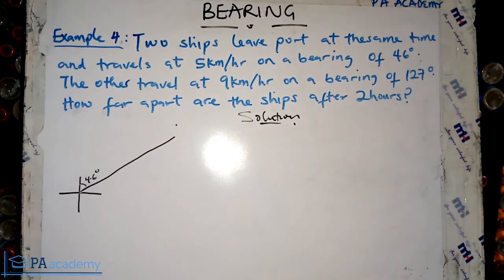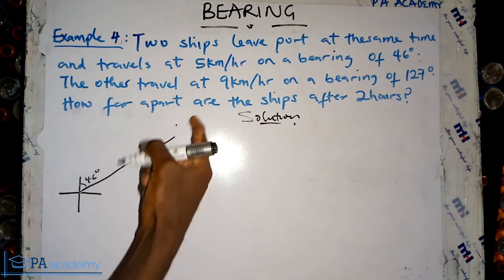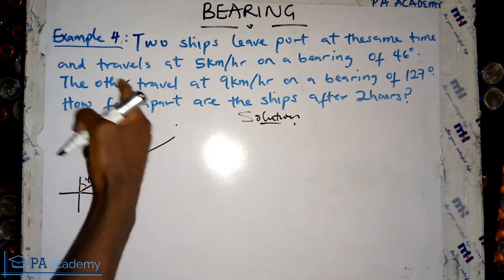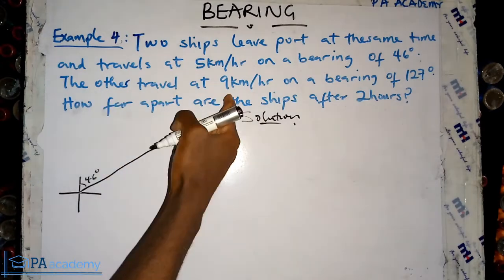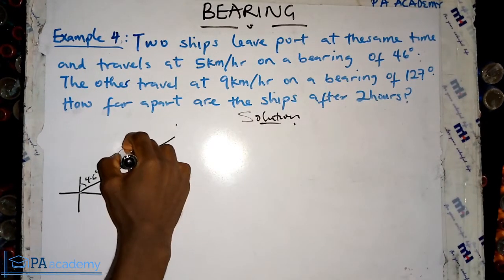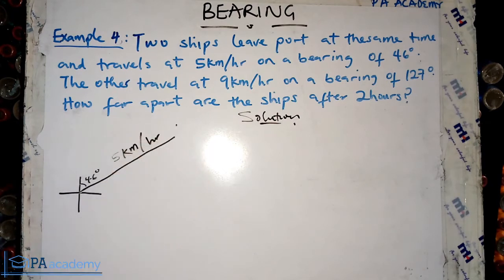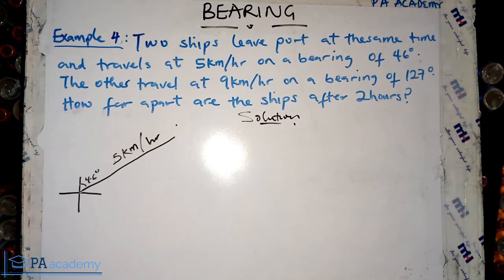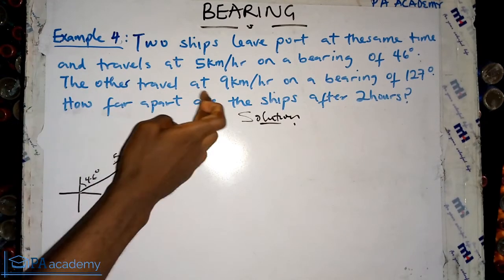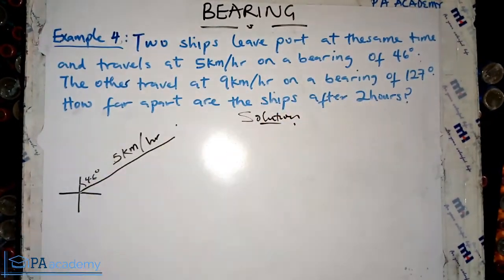This is the first ship, which travels at five kilometers per hour. The other ship travels at nine kilometers per hour on a bearing of 127 degrees.